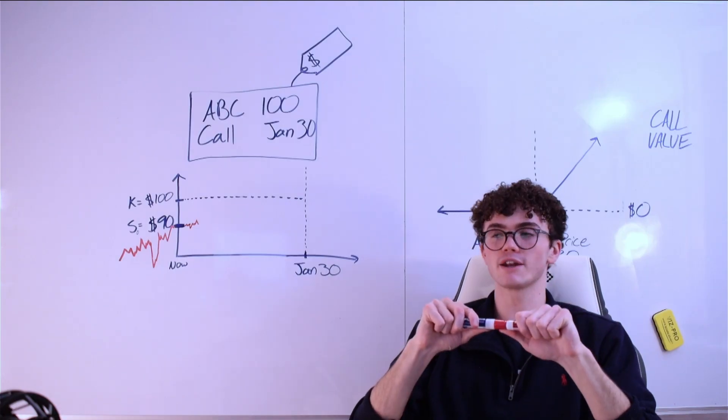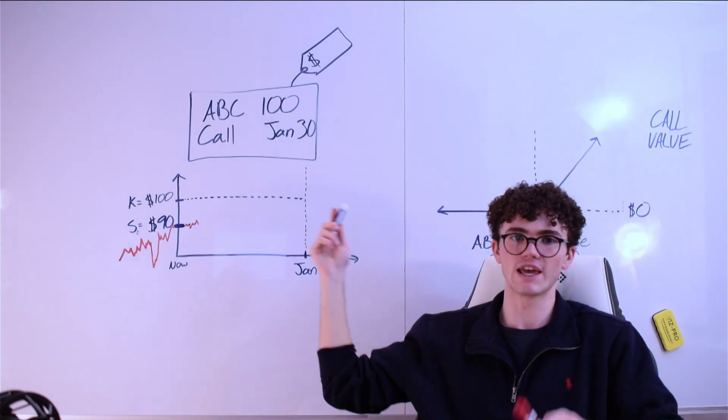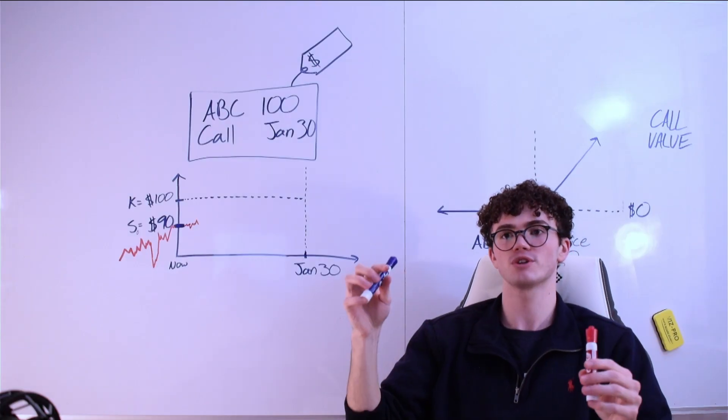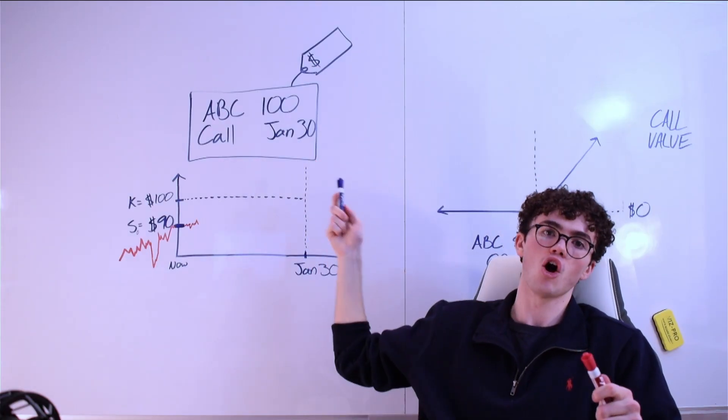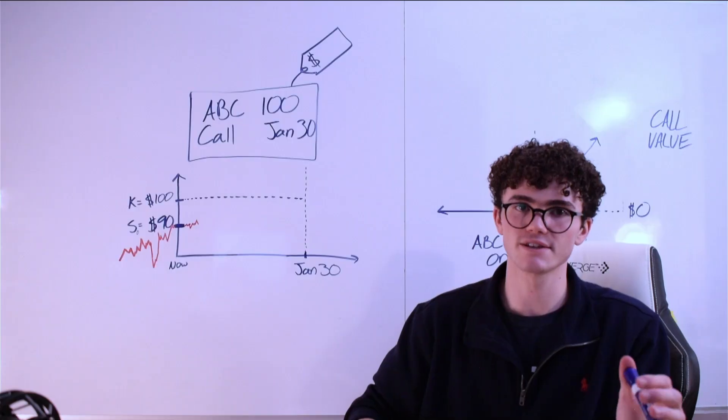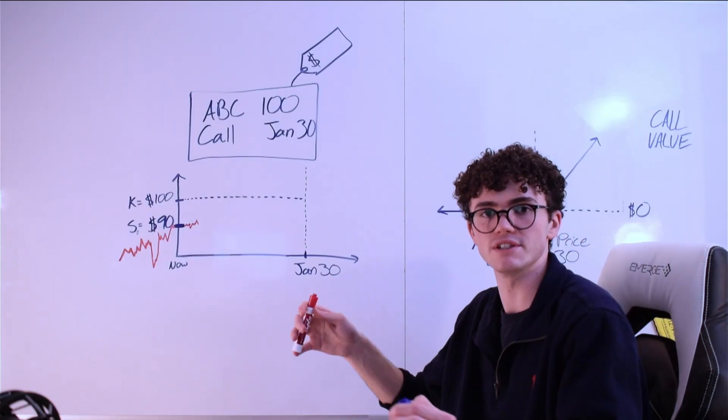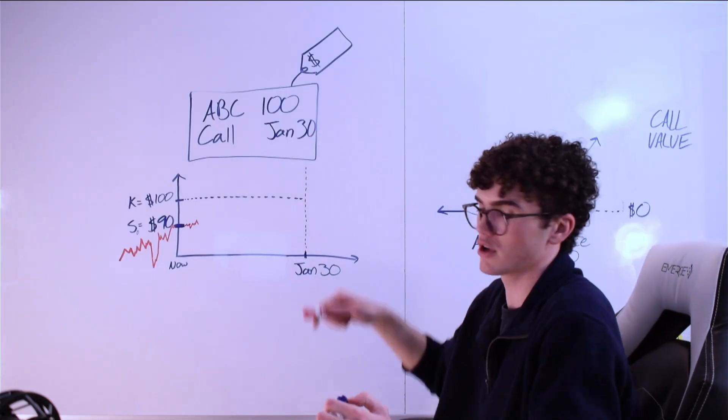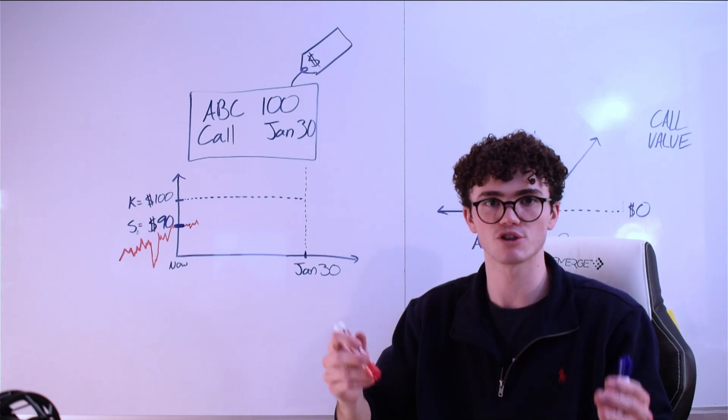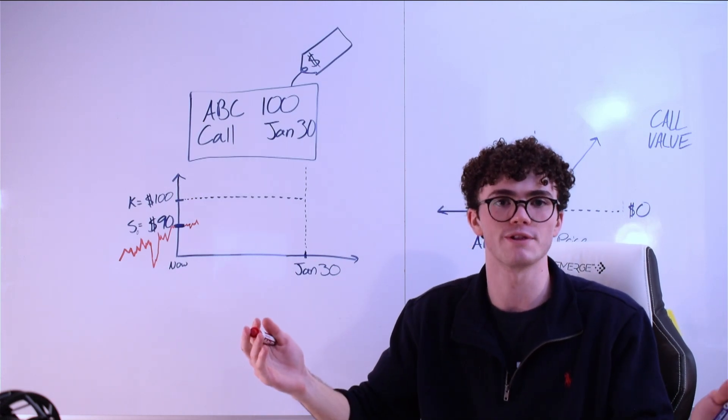In this example, I'm looking at a European-style call option on ABC stock that gives me the right to buy it at $100, which is the strike price, on January 30th. Just like the Tesla Cybertruck example, if ABC stock is trading below the strike price of this option, meaning the price that the option allows me to buy it at, on the expiration date, the option is worthless.